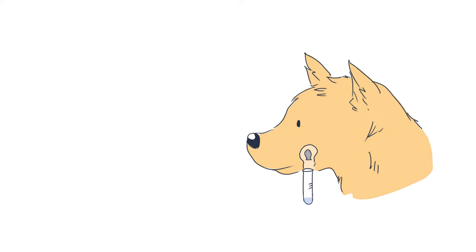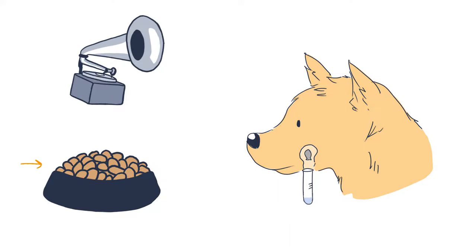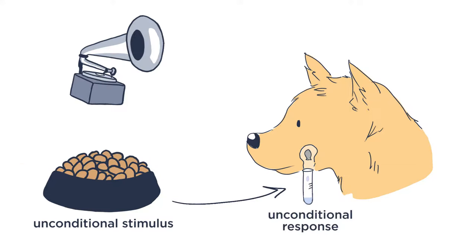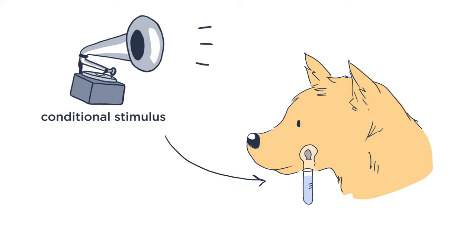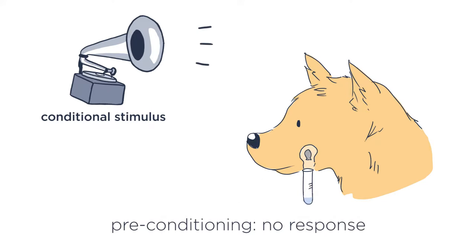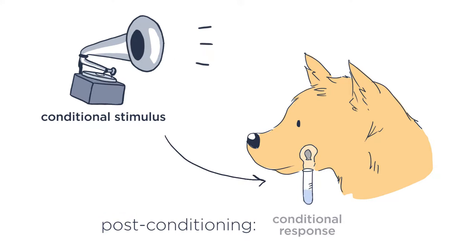First, Pavlov repeatedly exposed the dogs to two stimuli together. The first is the unconditional stimulus — even without the conditioning process, it induces a response; it makes the dogs drool. The second is the conditional stimulus, because it needs the help of the conditioning process to create a response. Nothing about a thousand-hertz tone is inherently delicious, but with conditioning, it induces the same response as the unconditional stimulus.